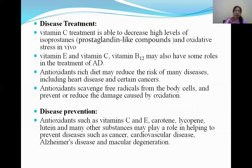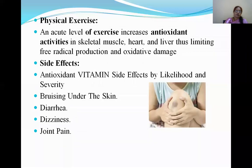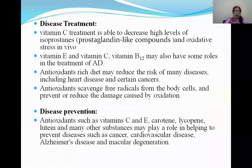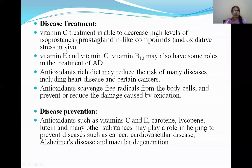Antioxidants are used to treat and prevent diseases. Vitamin E, vitamin C, and vitamin B12 are used in treating Alzheimer's disease. Vitamin C decreases high levels of isoprostanes (prostaglandin compounds) and oxidative stress. An antioxidant-rich diet may reduce the risk of many diseases including heart disease and certain cancers. Antioxidants neutralize free radicals from body cells and prevent or reduce damage caused by oxidation.